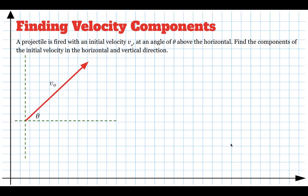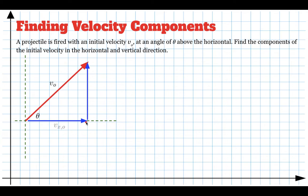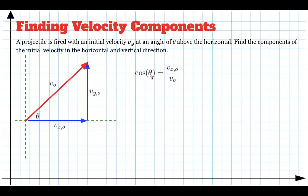Let's look at what this looks like generally. If we have a launch velocity of v_initial at an angle of theta above the horizontal, we want to find the horizontal component vx_initial and the vertical component vy_initial. Cosine of the angle equals adjacent over hypotenuse, so: cos(θ) = vx_initial / v_initial. Multiply both sides by v_initial and we get vx_initial = v_initial × cos(θ). The horizontal component of the velocity is the initial speed times the cosine of the angle.